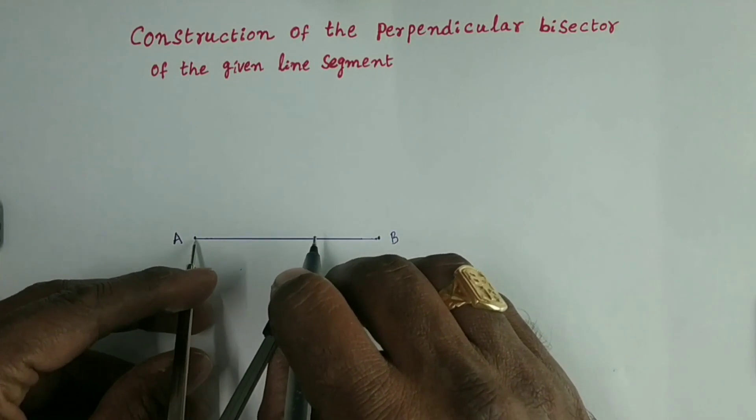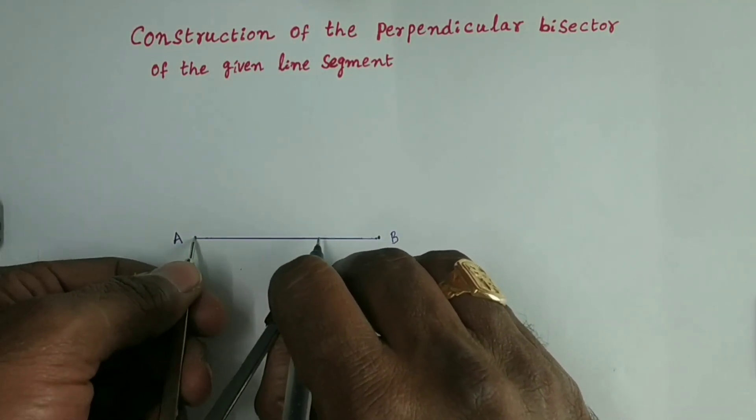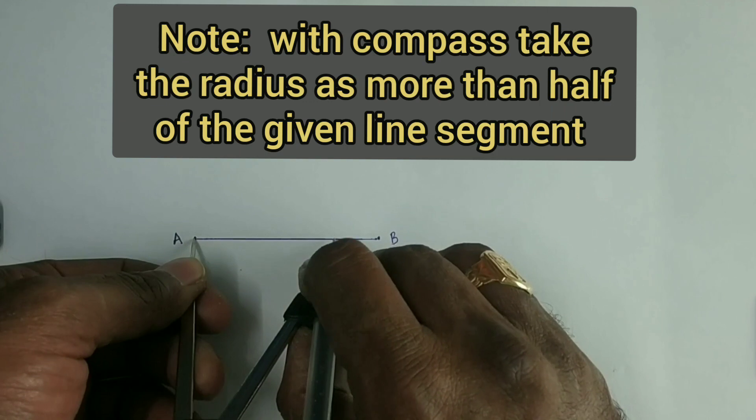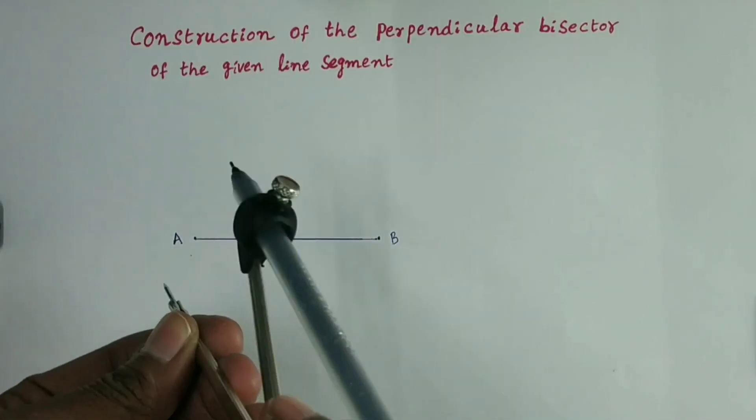With compass, take the radius as more than the half of the length of the given line segment.